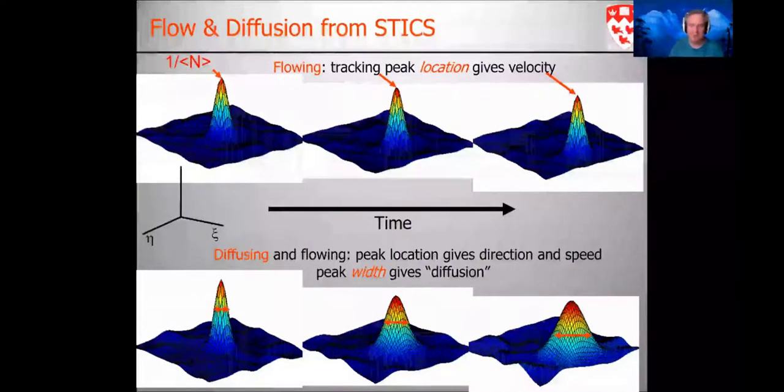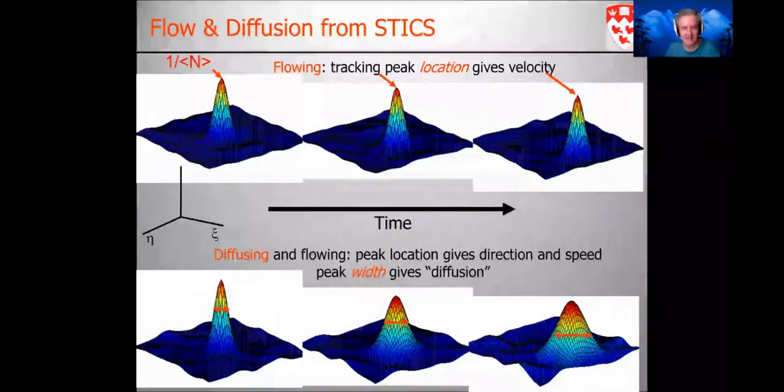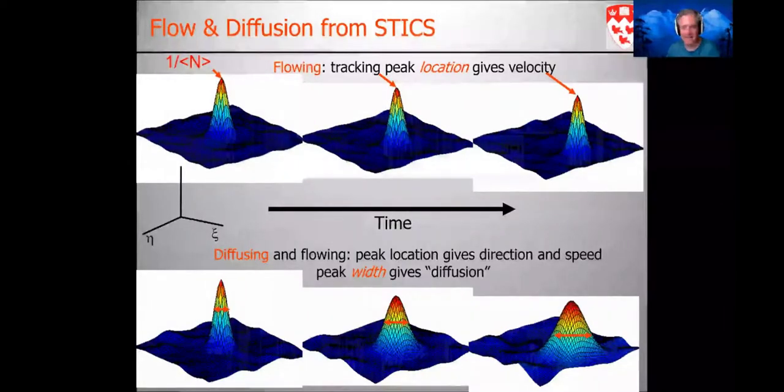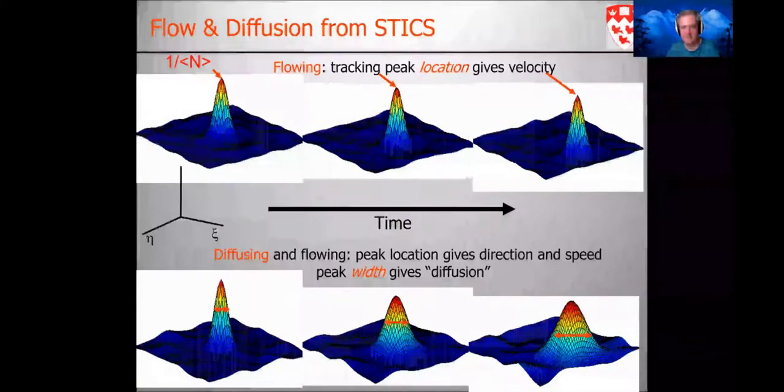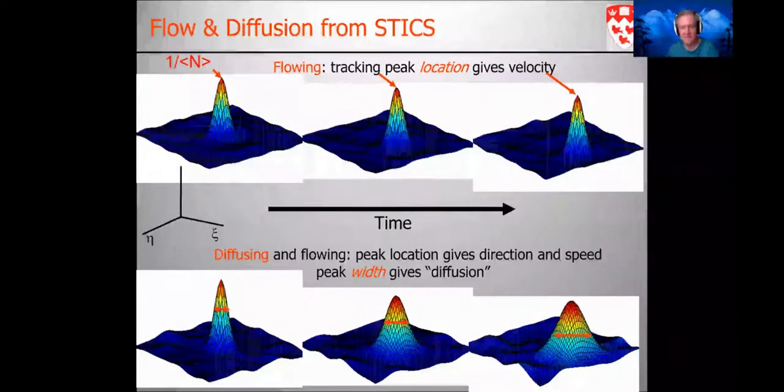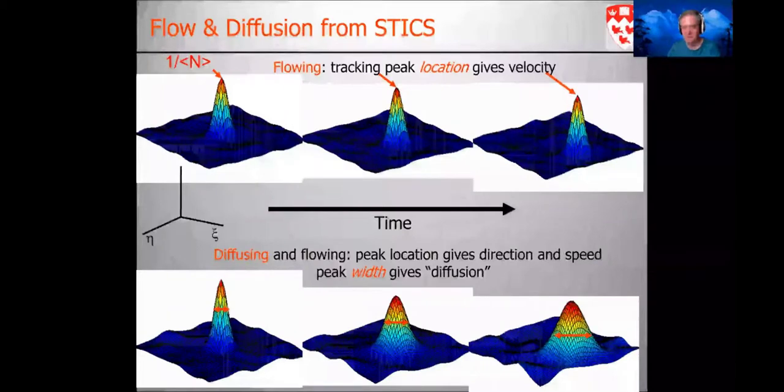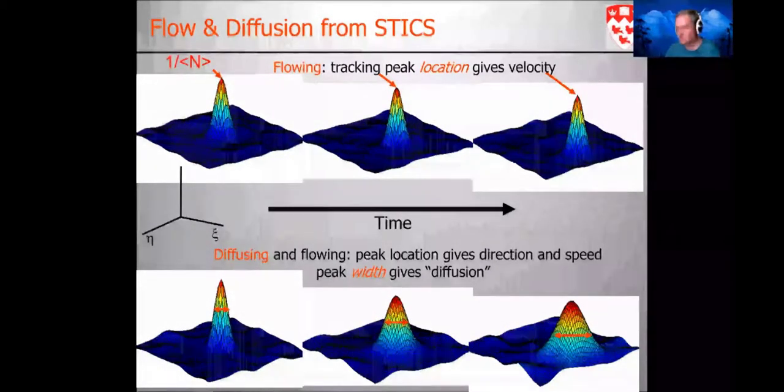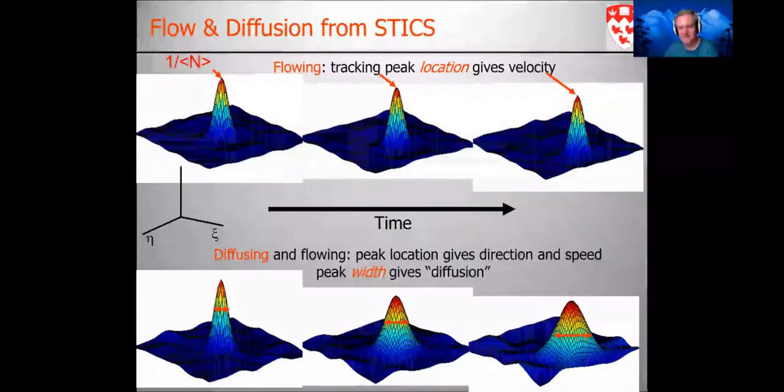This slide summarizes what I just showed in the animation. Here, we see a peak for a flowing population starts in the center and then translates over time. We track that location over lag time to obtain the velocity for that component of the flowing population. Below, we show a slightly more complicated case where you have a flow biased diffusion. The peak is still translating but note that it's decaying and spreading because of the diffusion of the population. Each time we would analyze correlation function for a given region of interest for a certain time window, repeat the process in space and time, map the dynamics in the cell.